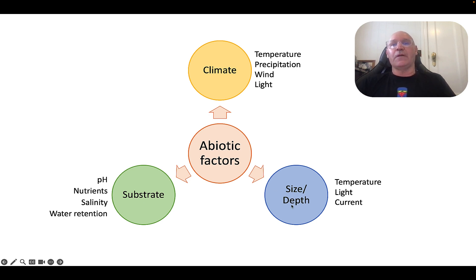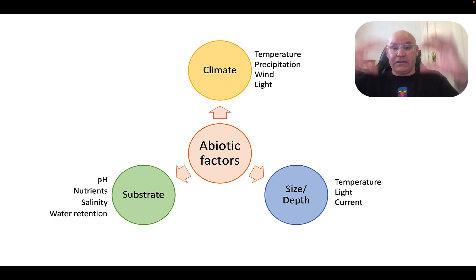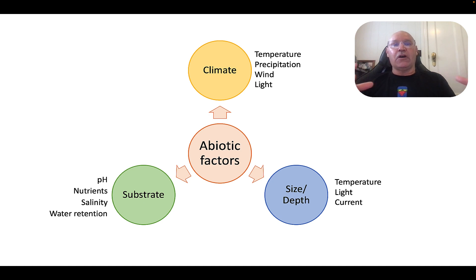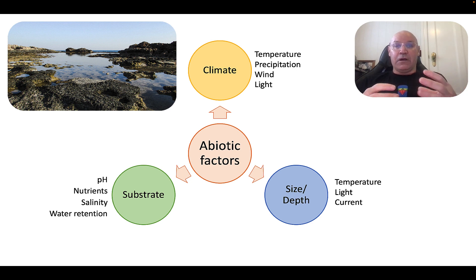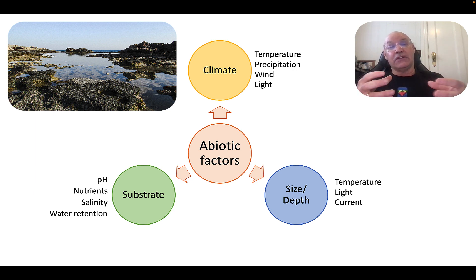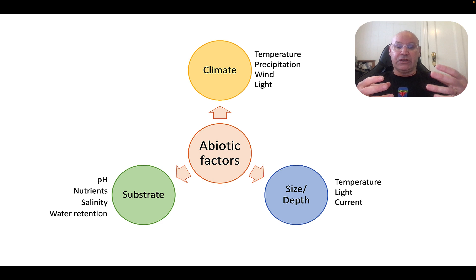In terms of size and depth, thinking about depth in an aquatic ecosystem: as you go further down, there is decreased temperature, decreased light, and variation in water currents. For size, consider a rock pool — because there's not a lot of water in it, temperature can change quite quickly, and as water evaporates the salinity changes. Temperature also affects oxygen saturation and similar factors.